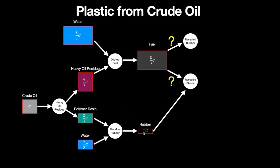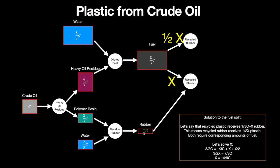This means that we need to produce a bit less rubber with the fuel. The way we can solve this problem is to consider that we are sending 1/3 C plus some variable X of rubber to the recycled plastic. The X comes from the recycled rubber, which must thus receive half X of plastic. Both recipes consume corresponding amounts of fuel, so the total fuel consumption is 1/3 C plus X plus half X. But we also know that this equals 8/3 C. Thus we get an equation we can solve, and X becomes 14/9 C.